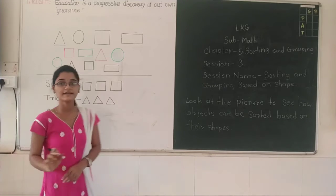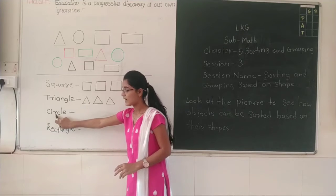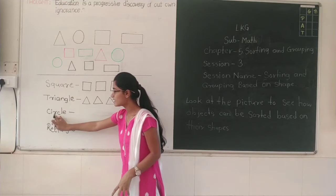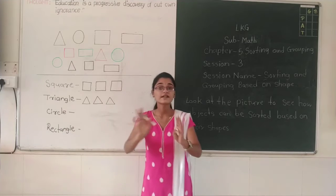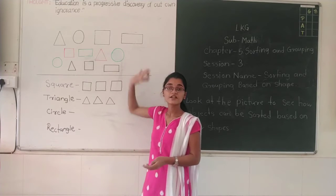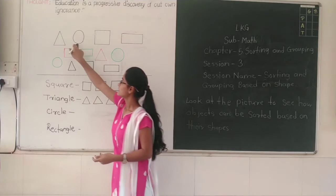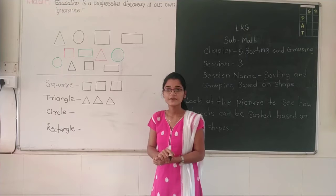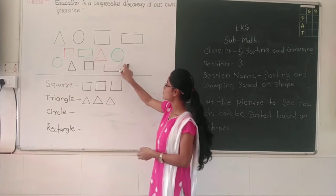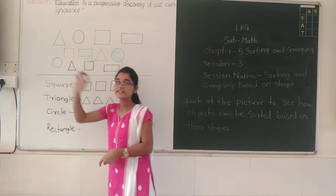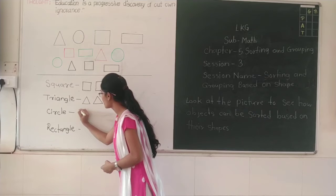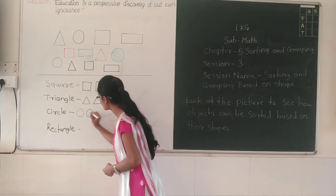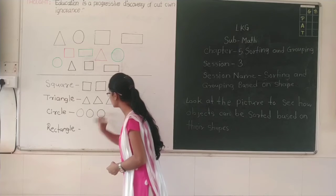Now next — CIRCLE. Circle. Now look at here and tell me where is the circle shape. Yes, this is circle shape. Now how many circle shapes are here? Count it — one, two, three. Three circle shapes are here. So here you have to draw three circles: one, two, and three.